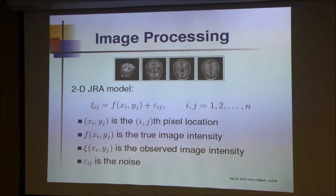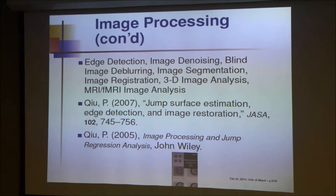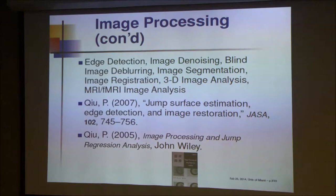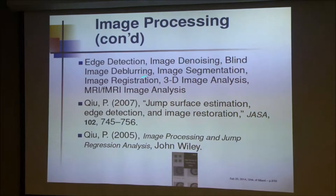I work on many different topics in image processing, including edge detection, image denoising, blind image de-blurring, image segmentation, and image registration. Blind image de-blurring — when your camera moves a little and the image is blurred, and you don't know the blurring mechanism, such as satellite images blurred by turbulence — is a tough, still-open problem in my opinion. Image registration is a hot topic in medical imaging: if we want to see whether a tumor grows or shrinks between two visits, we need to geometrically match up the two images first.